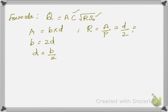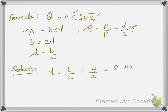Moving to the solution: d is equal to b by 2, which is 4 by 2, so d equals 2 meters. Area A equals b times d, which is 4 times 2, giving 8 square meters.